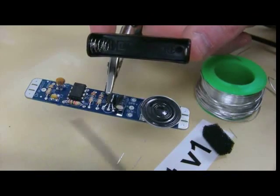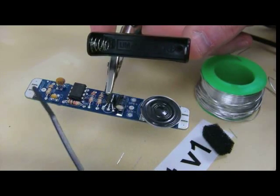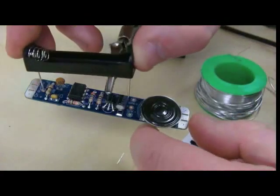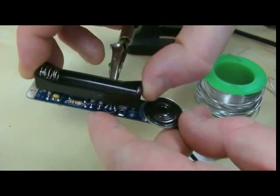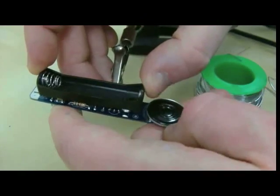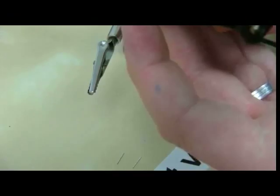So the plus goes in this hole just here and the minus goes in this hole just here. And the battery pack sits just proud of all the components. So you just put that on until it sits down nice and flush on the components and then just turn it over and solder it.